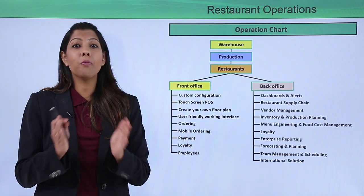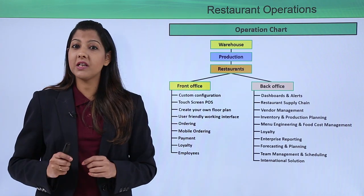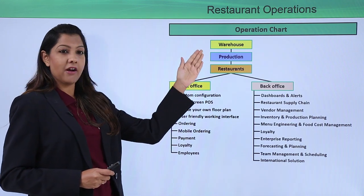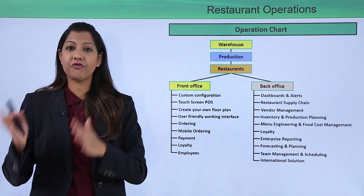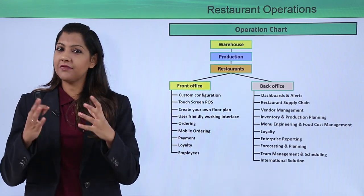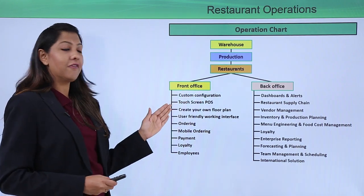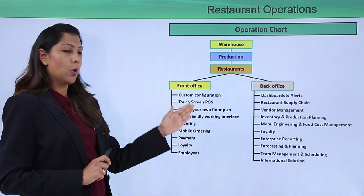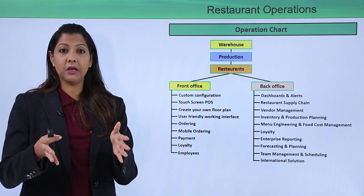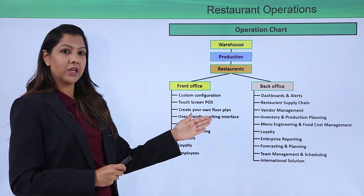Running a particular restaurant takes a lot of work. You need to understand whether it's a warehouse production or restaurant setup. You need a front as well as a back office. The front office faces the customers — you need customer configuration, touch-screen POS for billing, and a floor plan if it's a multi-storey business location, as well as a user-friendly working interface.